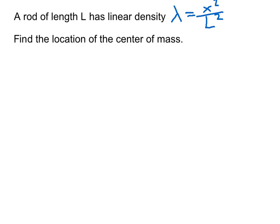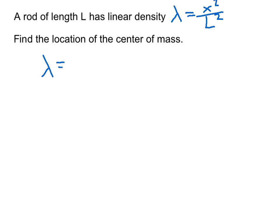Now let's talk about linear density. Linear density, lambda, is similar to normal density — density is mass over volume. For a linear object such as this rod, we do mass divided by the length of the object, and that gives us our linear density. Here, our linear density is x squared over L squared.